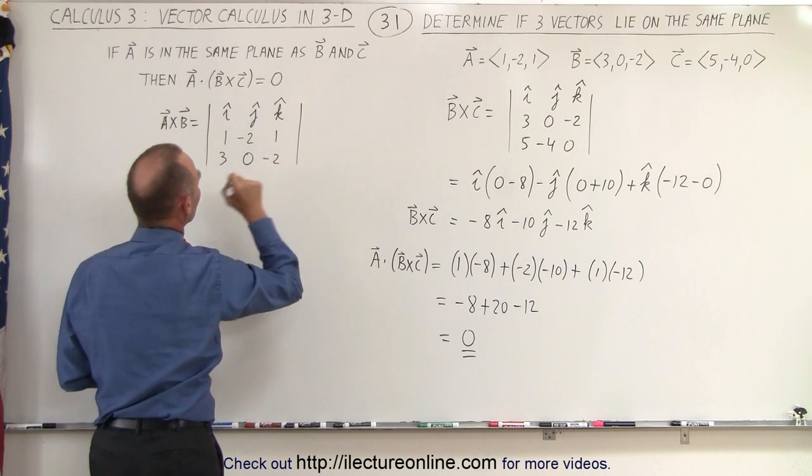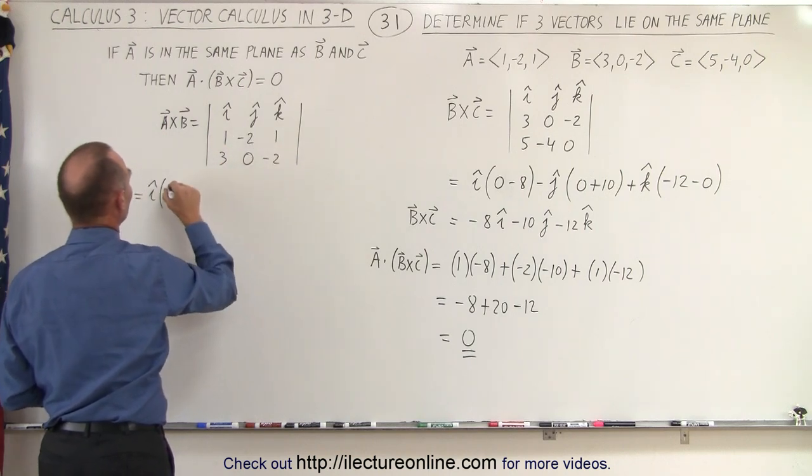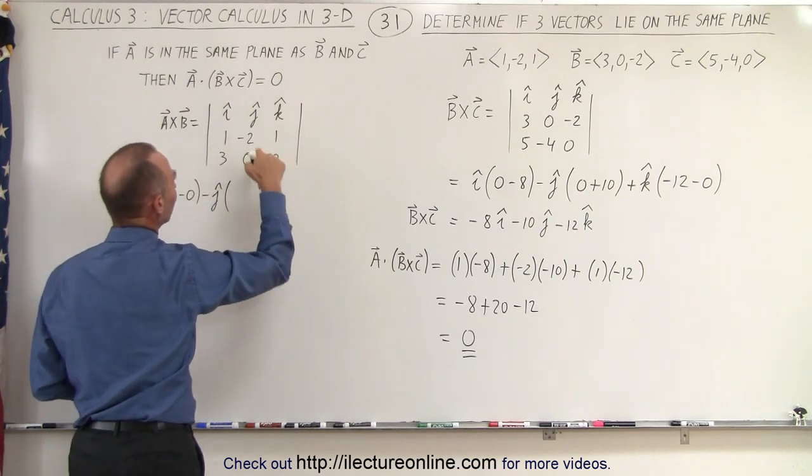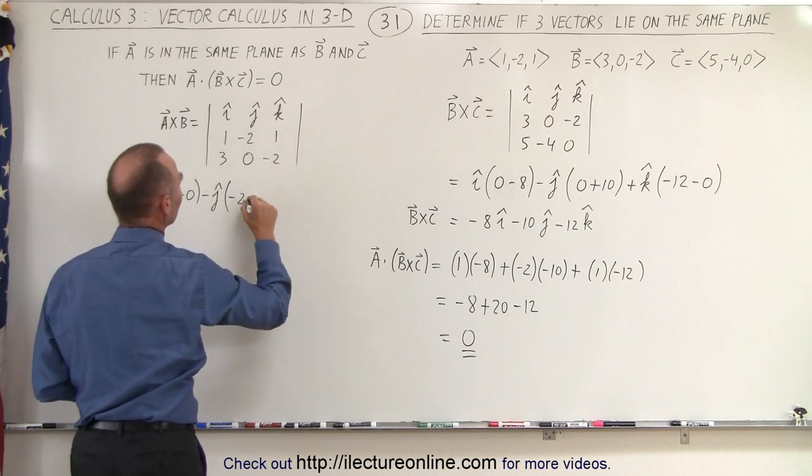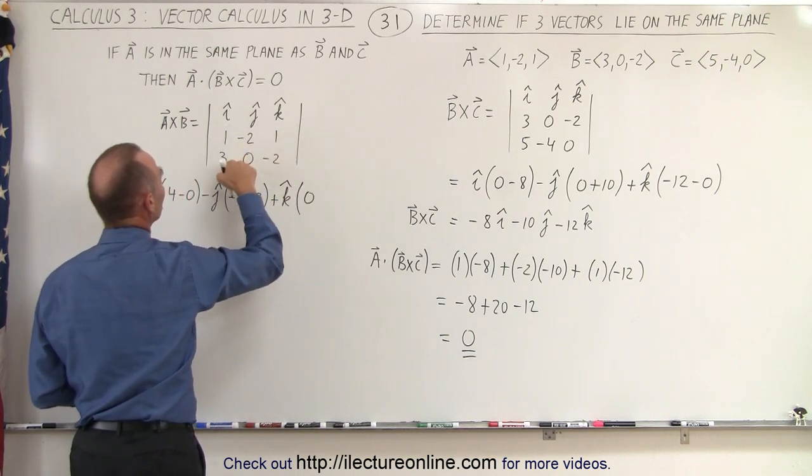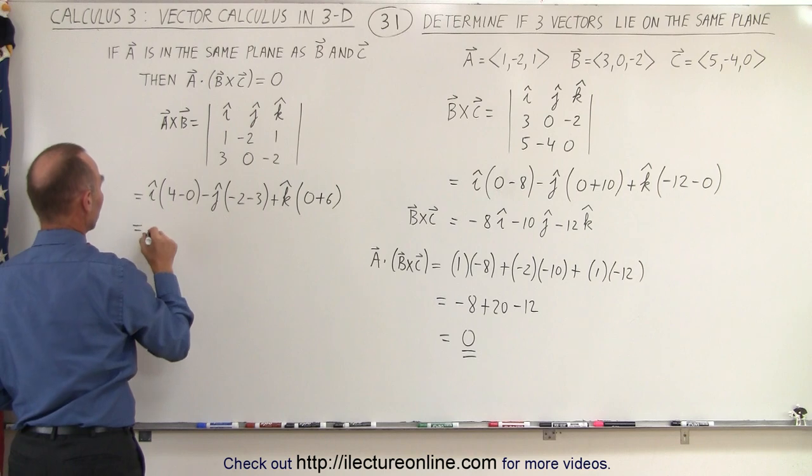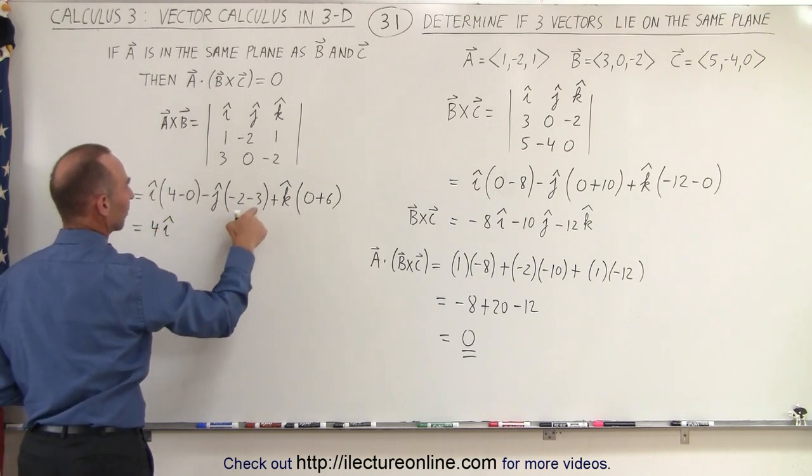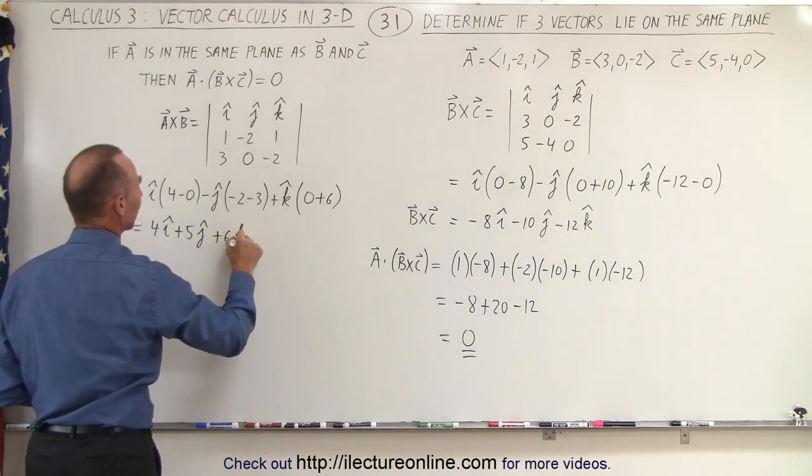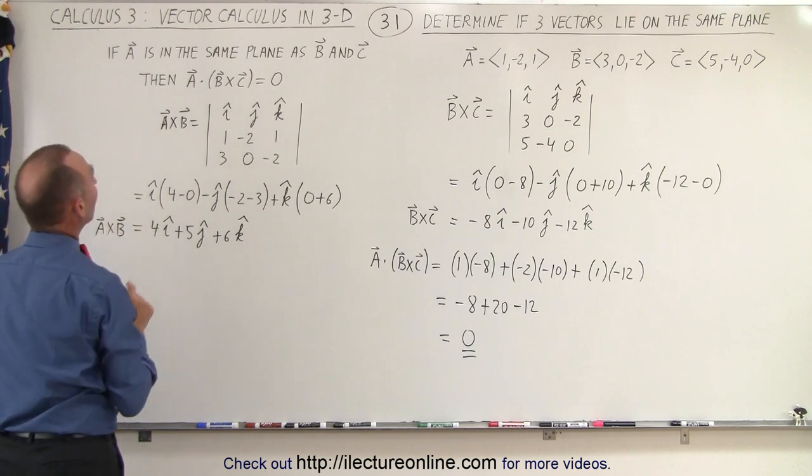0, and negative 2. So let's see what that equals. I times negative 2 times negative 2, that's 4 minus 0, minus J times 1 times negative 2 is negative 2, 1 times 3, subtract negative 3, plus K, we get 1 times 0 which is 0 minus negative 2 times 3, that's negative 6, negative becomes positive 6. So this becomes 4 in the I direction, that's plus 5 in the J direction, and that gives me plus 6 in the K direction. So now this is what we called A cross B.